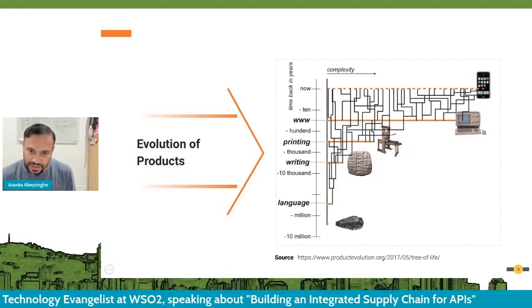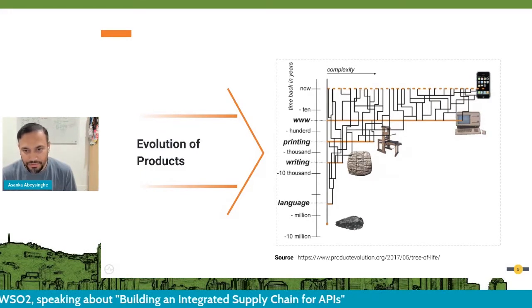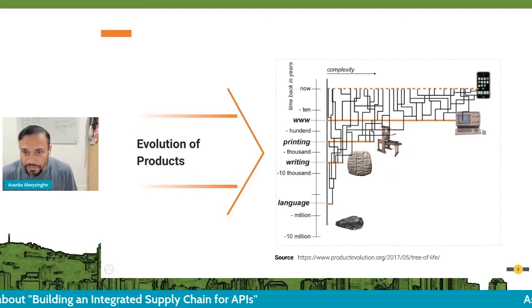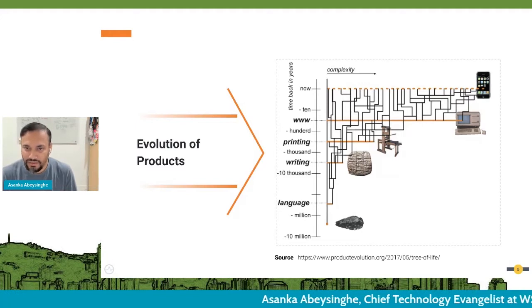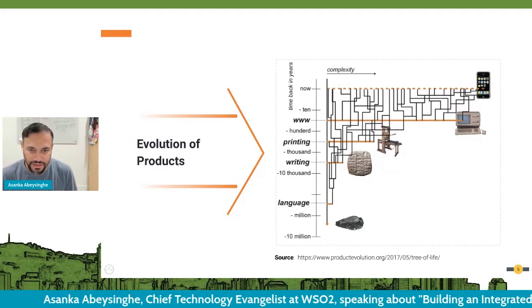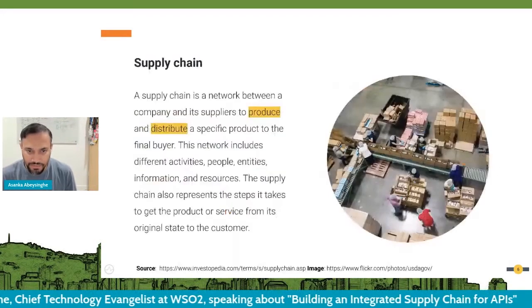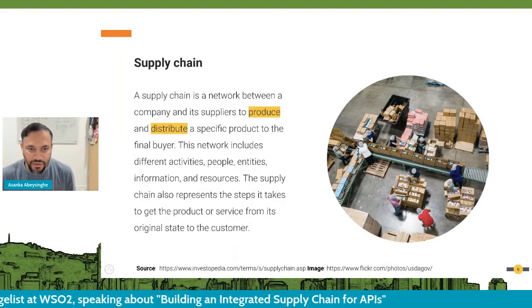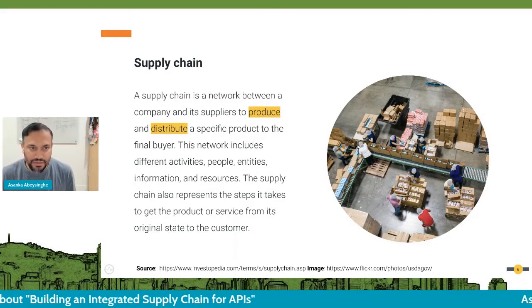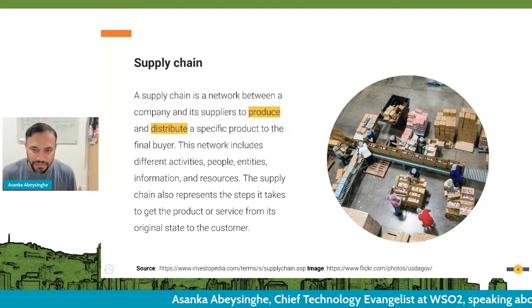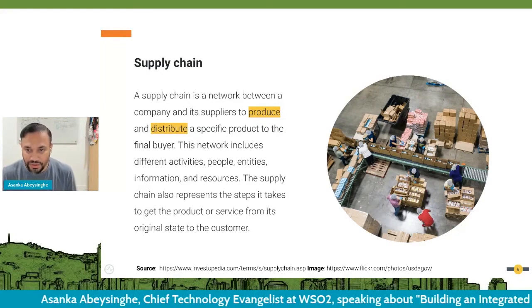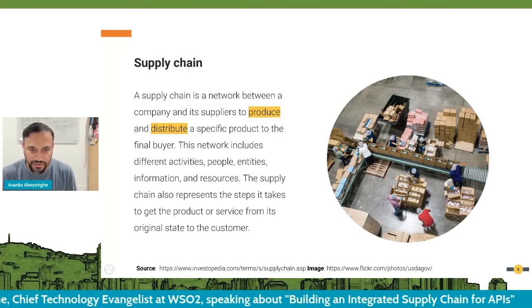What I need to highlight here is that simple single embedded products got more complicated over time. If you look at the mobile-based devices that we have, they are a combination of many parts compared to the first era of these products. When products required many components, that's where the supply chain came into the picture — basically how suppliers produce and distribute these products among a set of users.